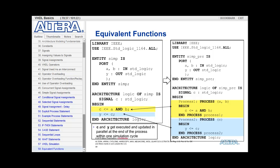Let's look at this example. In these two boxes, we have equivalent functions. On the left hand side, we have two implied processes — both simple signal assignments. Say A transitions: the first process turns on, executes A and B, and a value gets assigned to C. Then, since C changes, the second implied process turns on and assigns the value to Y. Thus, it would take two delta cycles but one simulation cycle to execute the function.